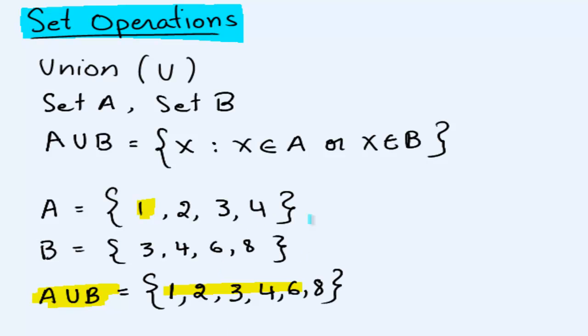But notice one thing. 3 and 4 appear in set A and 3 and 4 appear in set B. But we do not repeat them in our union. Why?